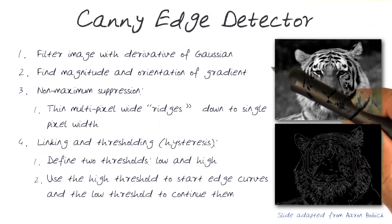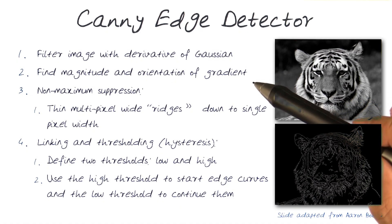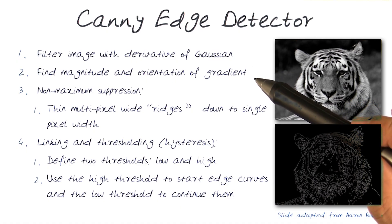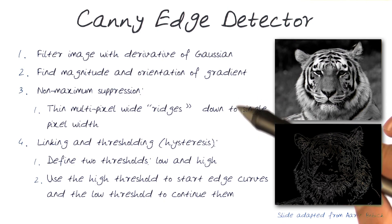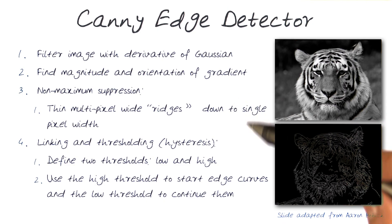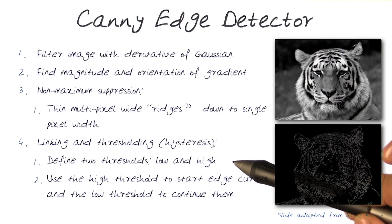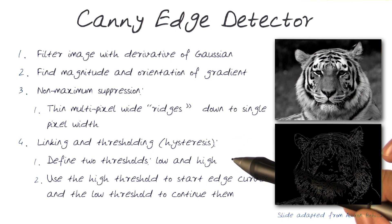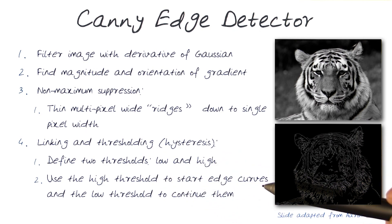Just to reiterate, these were the steps we went through: we filtered the image using a derivative of a Gaussian, found the gradient information, did non-maximum suppression to find the ridges down to single pixels. Then once we had these single pixels, we started linking and thresholding the edges — using the high threshold to start edge curves and the low threshold to continue them — to get an output like this.